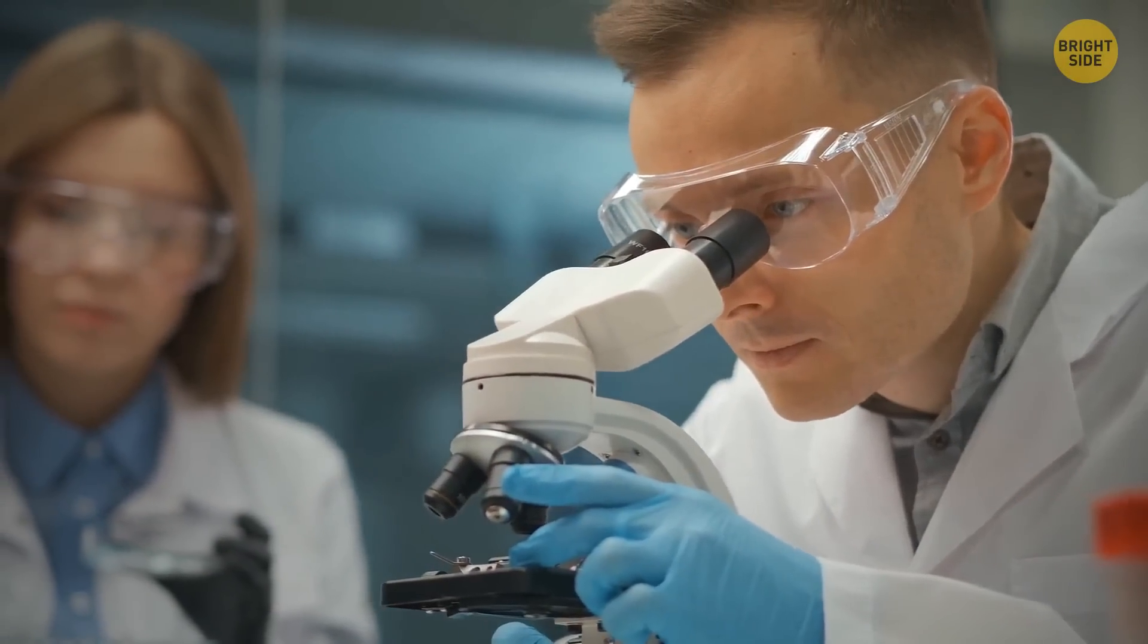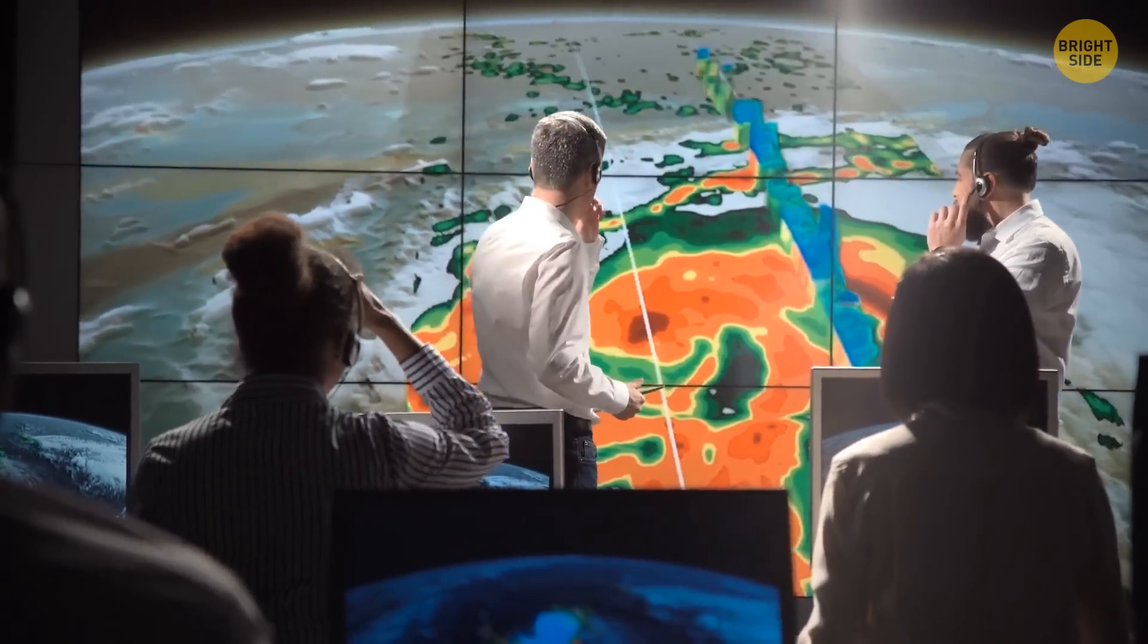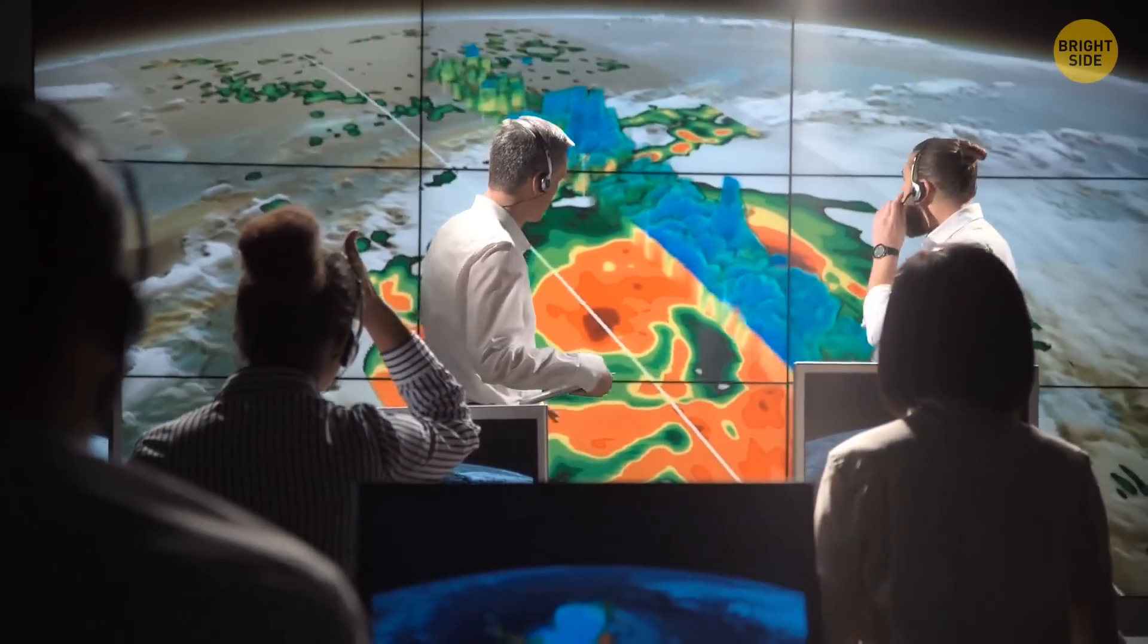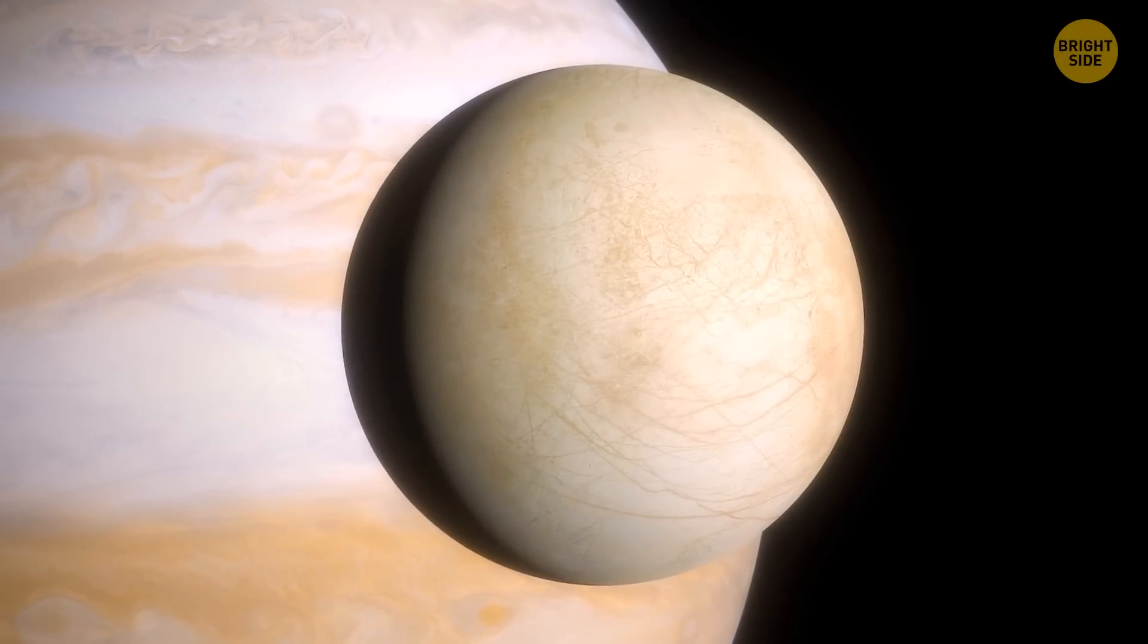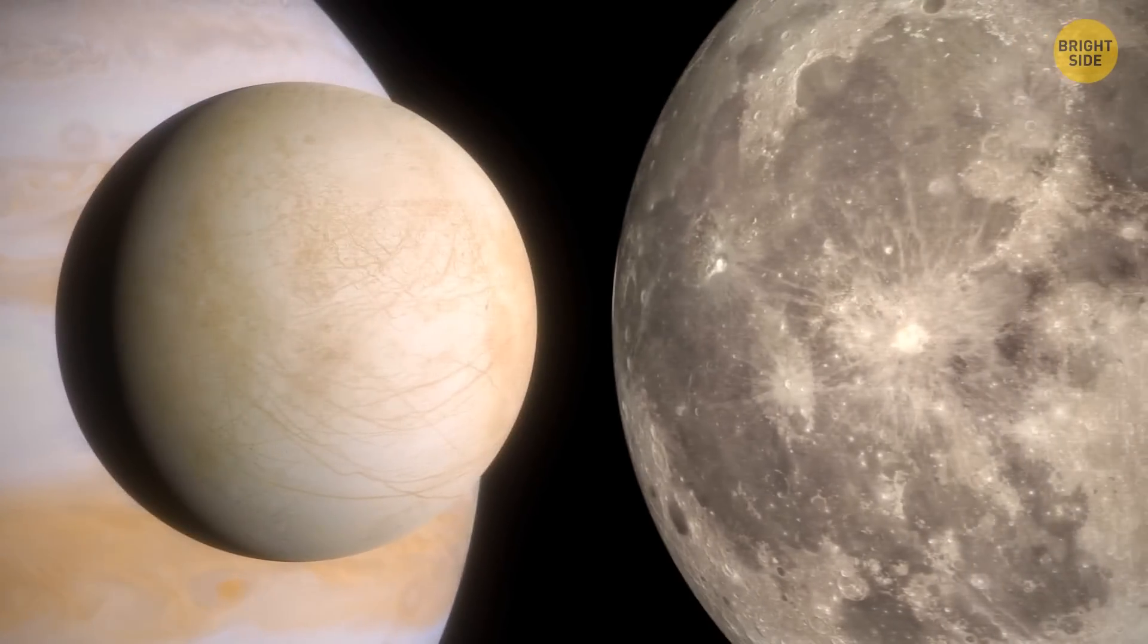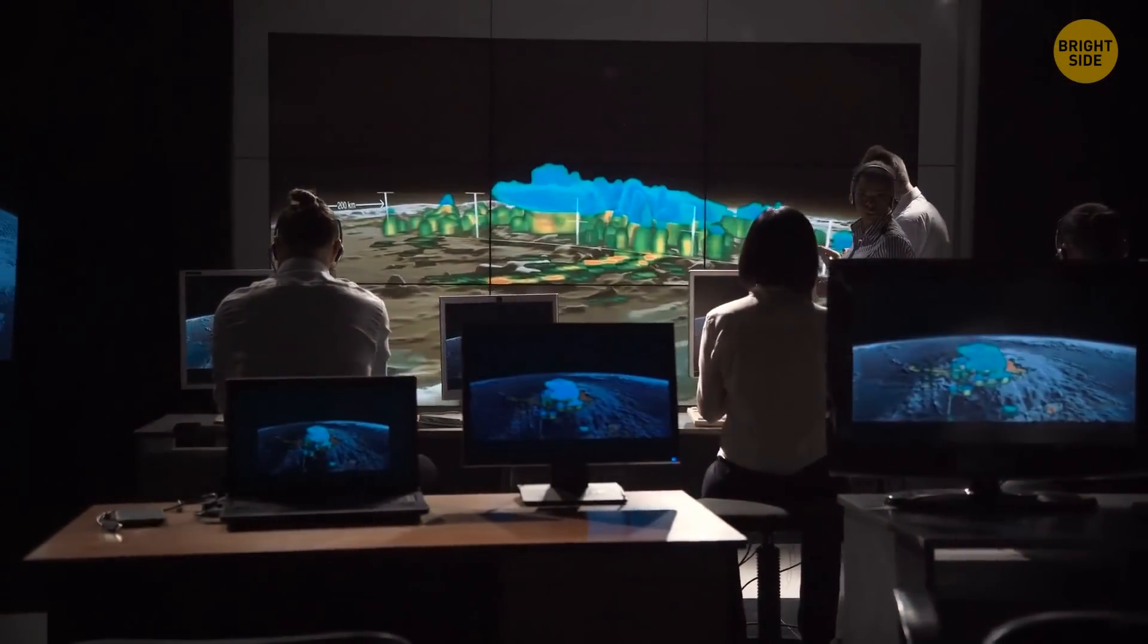Scientists tried to recreate the conditions on Europa in a lab. They discovered that by combining water, table salt, freezing temperatures, and high pressure, they could get a new kind of solid crystal. This substance might exist both at the bottom of Europa's ocean and on the moon's surface. But besides this information, researchers are in the dark.